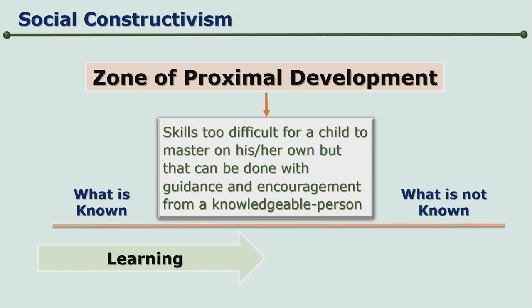Just as physical skills can be performed with support from someone else, even cognitive skills may appear too difficult for a child to master on one's own. But with a little guidance and encouragement from a knowledgeable person — that is the more knowledgeable other — the child will be able to reach a level which otherwise would have been very difficult to master. So, what is known and what is not known? In between, we have the Zone of Proximal Development, which can take us from what is known to even what is not known, with the help of a mentor who is a more knowledgeable other — who can be a parent, a peer, any adult, a teacher, or someone in society.